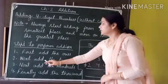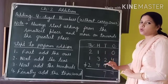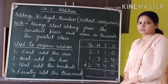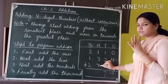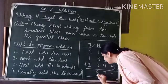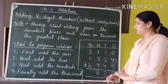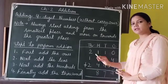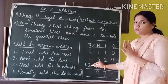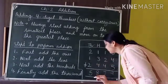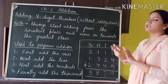The third step is to add the hundreds. We add the digits at the hundreds place: 1 plus 3 plus 4 equals 8. The last step is to add the thousands. We add the digits at the thousands place: 2 plus 1 plus 2 equals 5. This is how we perform addition of 4-digit numbers without carryover.